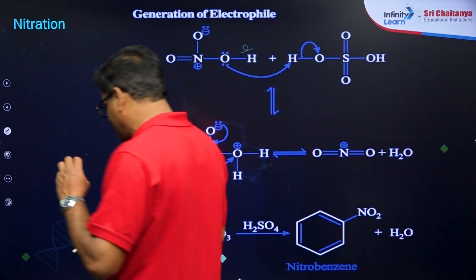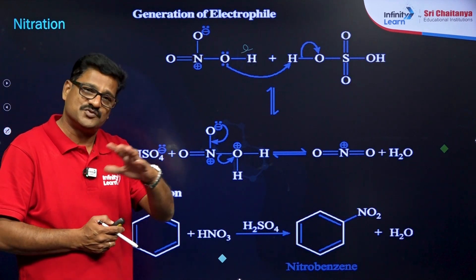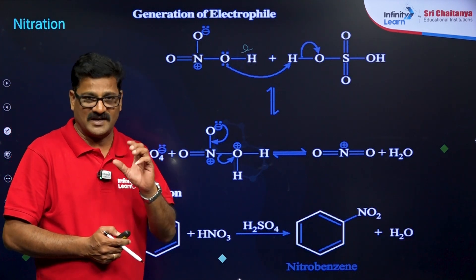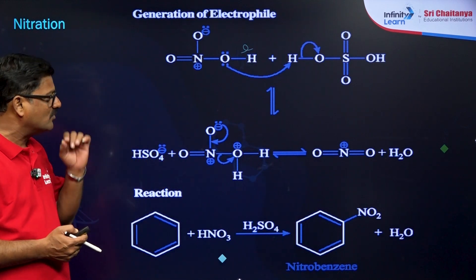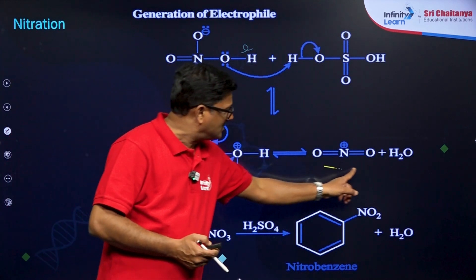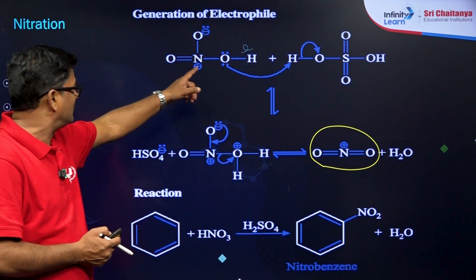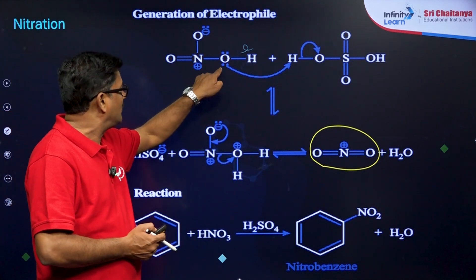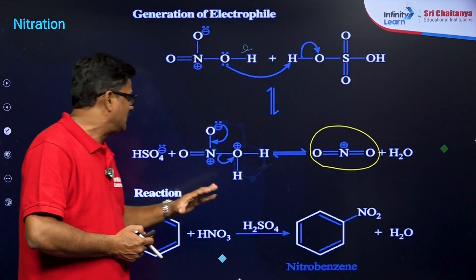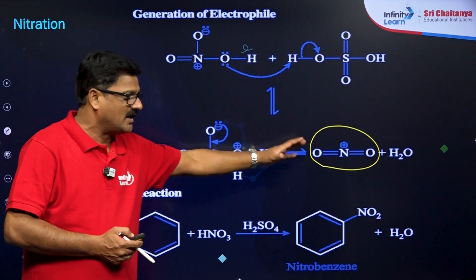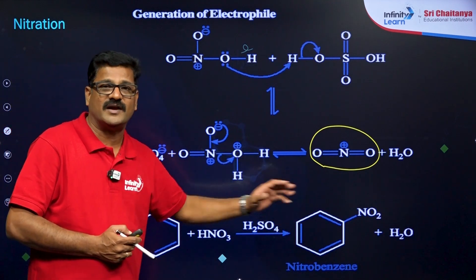Nitration is very important. A mixture of HNO3 and H2SO4 is used as the nitration mixture, maintained at low temperature. NO2⁺ is the electrophile in this reaction. HNO3 acts as a Lewis base, generating NO2⁺ as the electrophile, to give benzene to nitrobenzene.